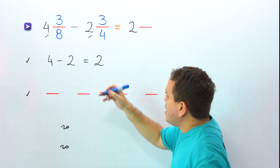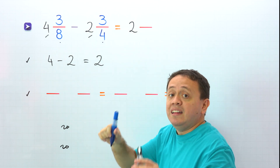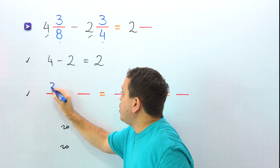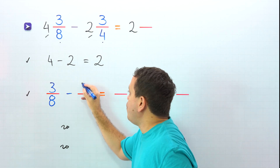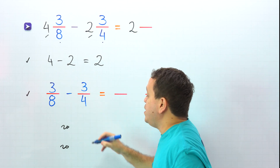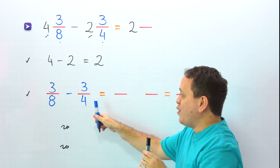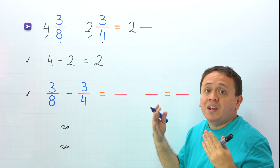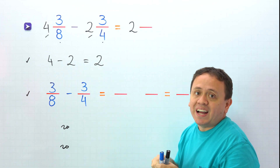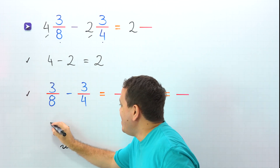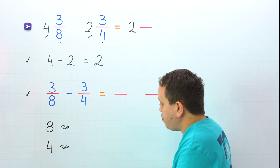It's time to subtract the fractions. The fractions are 3 eighths and 3 fourths. We put 3 eighths minus 3 fourths. These two fractions have different denominators — we have 8 on the left and 4 on the right. To find the difference, we need the least common multiple of the denominators, or the least common denominator. The denominators in this example are 8 and 4.